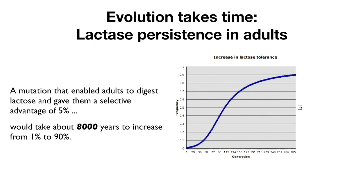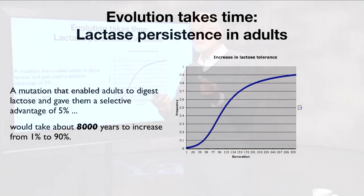We think it has been since about 6 to 10,000 years before Christ — so 8 to 12,000 years ago — since cattle, sheep, and goats have been domesticated. A mutation that enabled adults to digest lactose and gave them a selective advantage of five percent — because they would have more calcium, more protein, and a more stable food supply — would take 8,000 years to increase from one percent up to 90 percent. And that's just a very straightforward simple Mendelian trait with two alleles under selection.